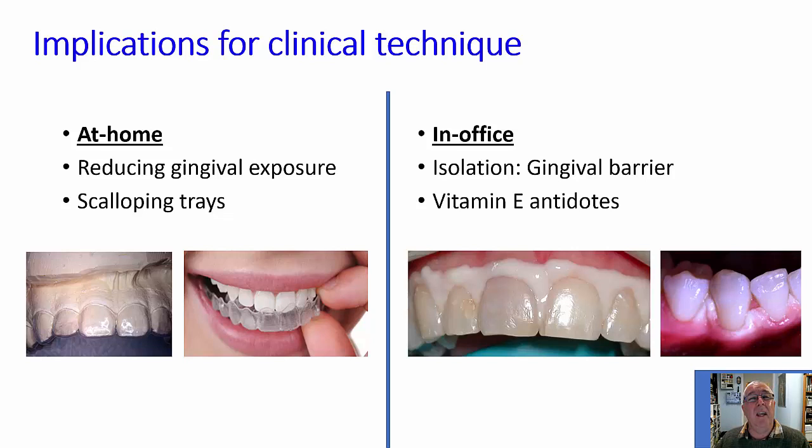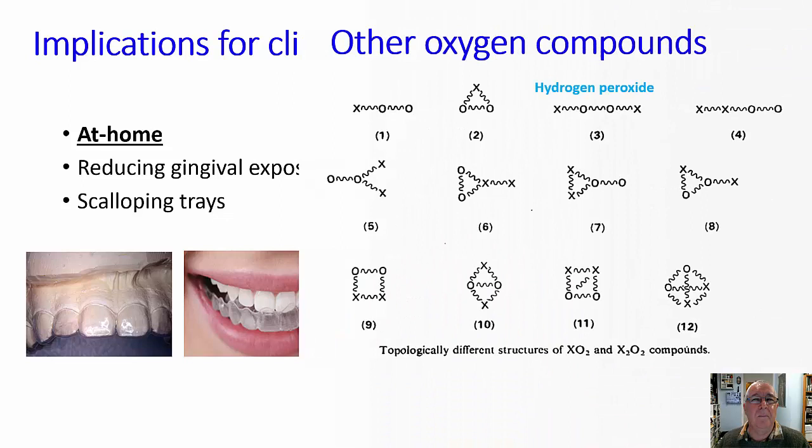Whenever we're using ROS at high concentrations in the mouth, it's essential to have really good gingival barrier protection. Otherwise, there will be burns on the gingiva and on the oral mucosa, such as the example shown here on the right-hand side.